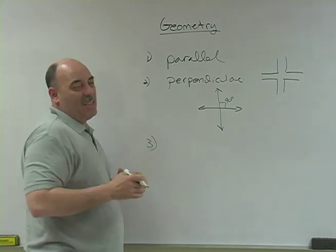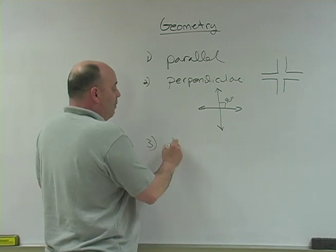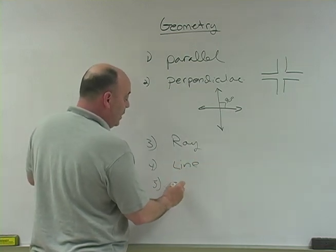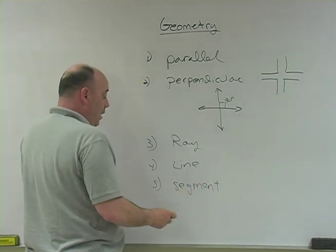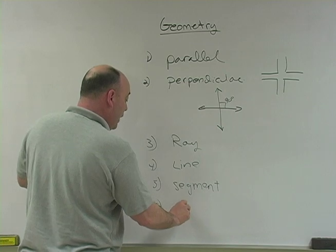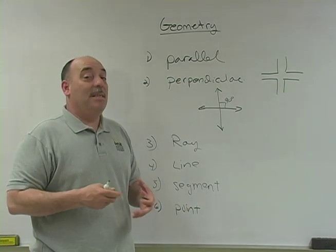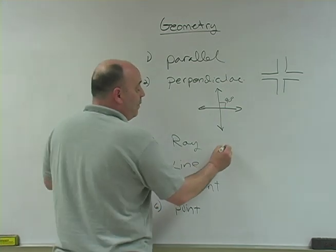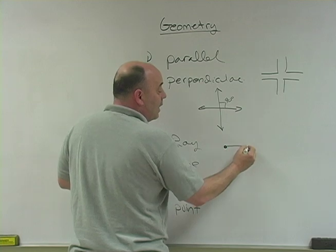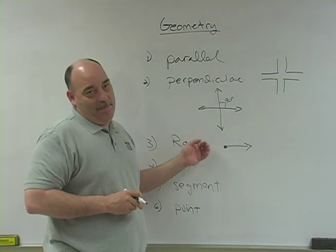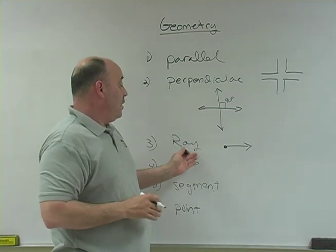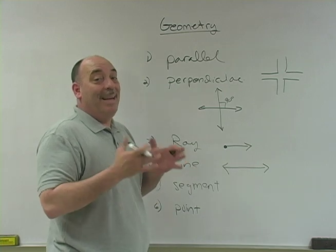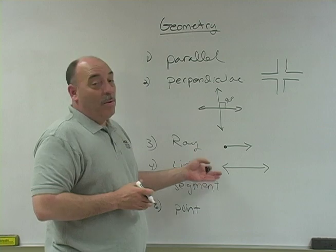A third group covers some of the more basic concepts. We've talked about a ray, a line, a segment, and a point. The symbol for a ray is a dot — a starting point — with a segment and an arrow on the end. Think of a flashlight: you turn it on and it creates a ray. A line extends in both directions, never stopping — it's a never-ending line. This would be the symbol for a line.